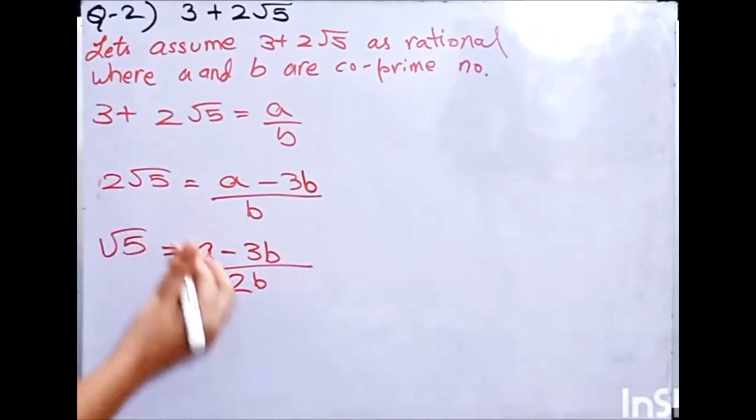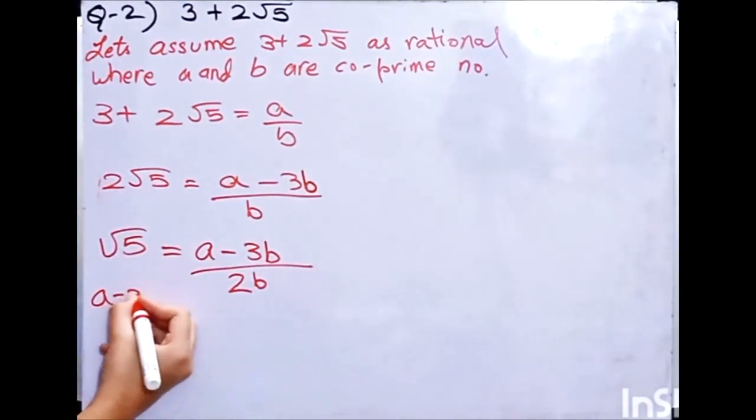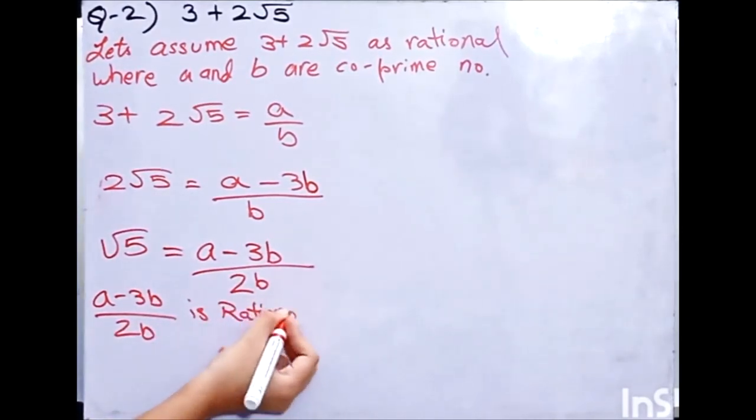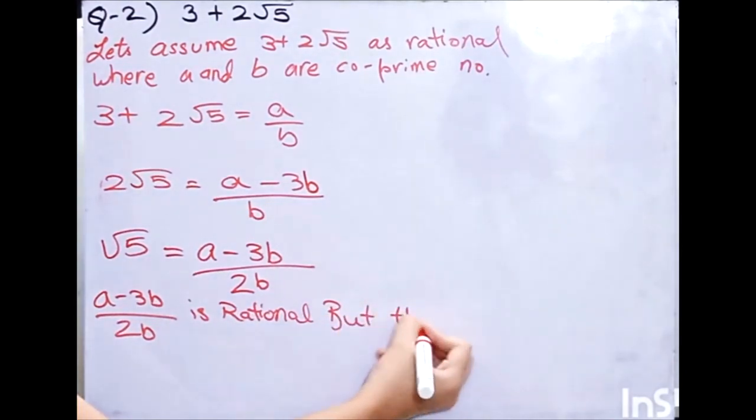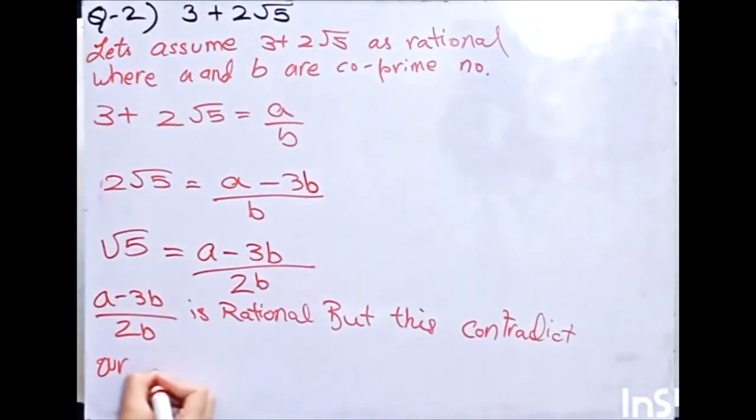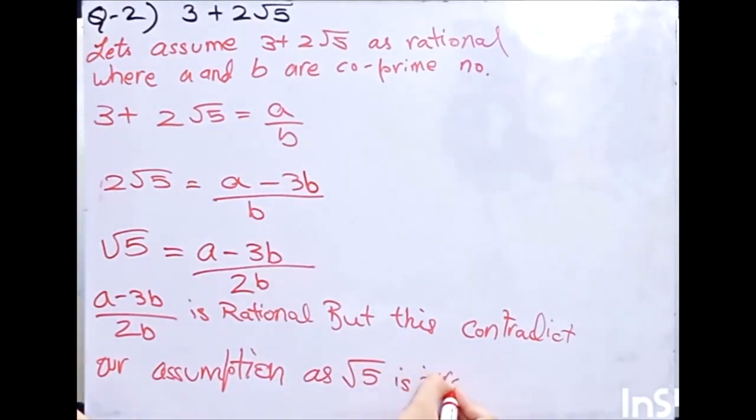So in root 5 you will say that a minus 3b by 2b is rational. But this contradicts our assumption which we have done, as root 5 is irrational. We know. Therefore 3 plus 2 root 5 is irrational. Simply you will prove it.